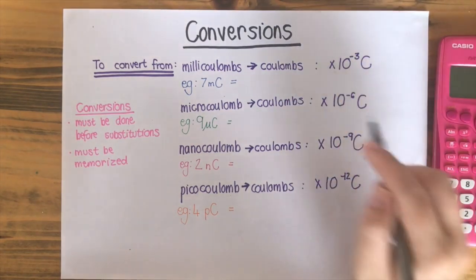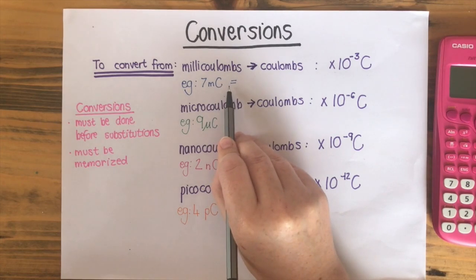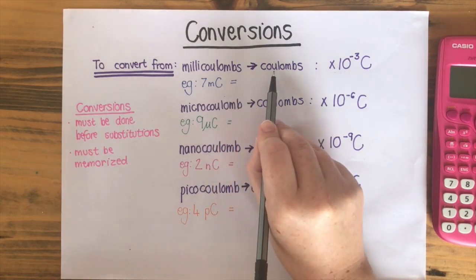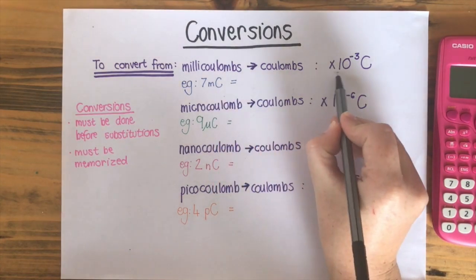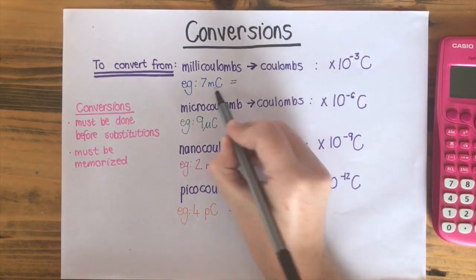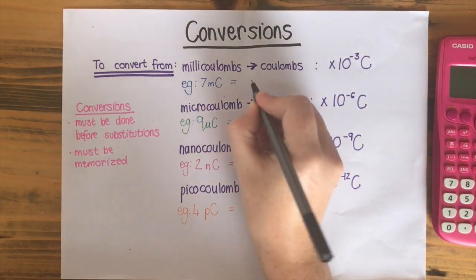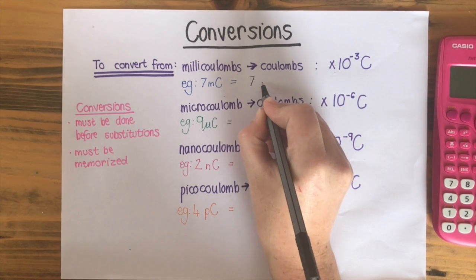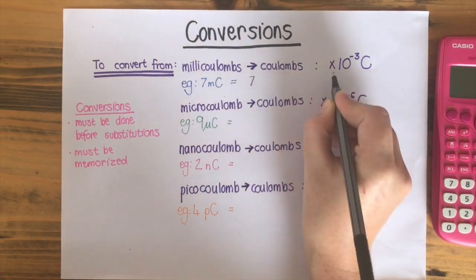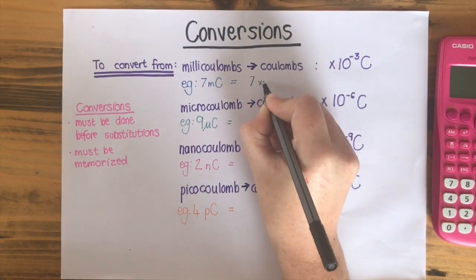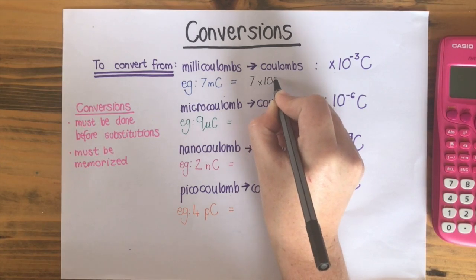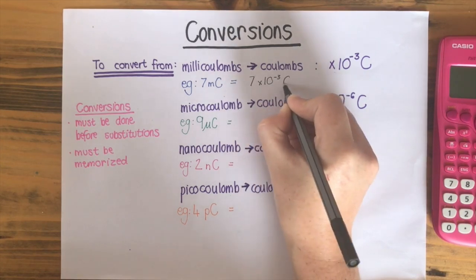So over here, if we have 7 millicoulombs and we need to change it to coulombs, we're simply going to substitute that into where the milli is. So we would go 7 and instead of small mc, we would go times 10 to the power of minus 3 coulombs.